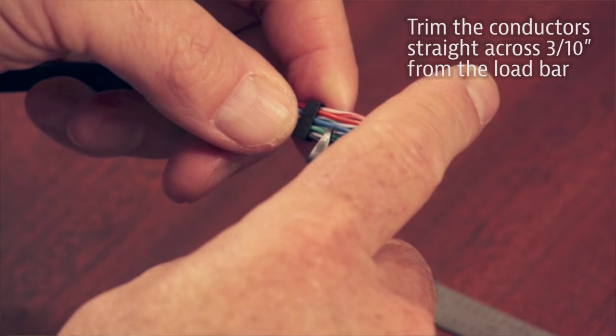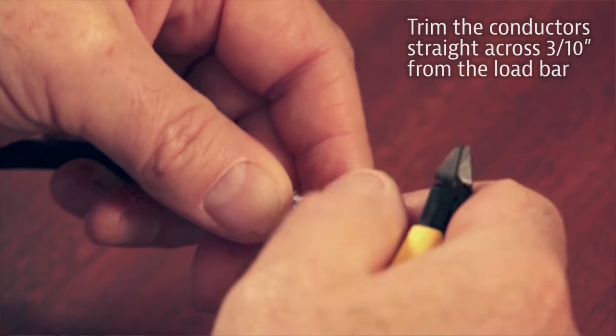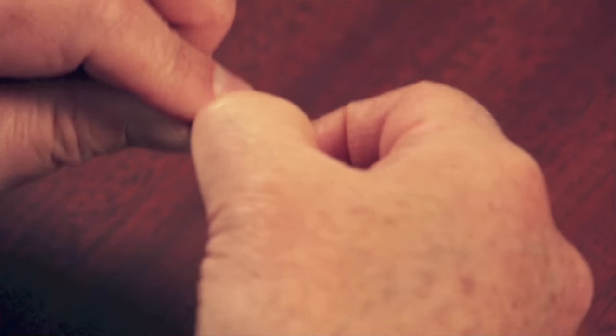The next step is to trim the conductors. From the fully seated load bar, I want to measure three tenths of an inch and trim off my conductors approximately three tenths of an inch. I'm holding my finger over the exposed conductors so they don't fly off. You want to make this nice and straight with no angle. Your load bar does move a little bit, so reposition it back in. Now I'm ready to insert this into the actual connector.